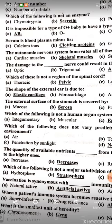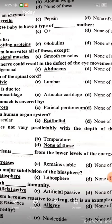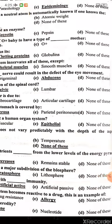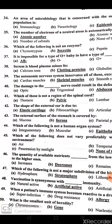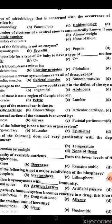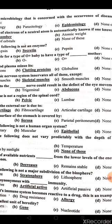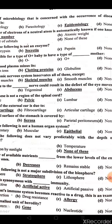The quantity of available nutrients decreases from the lower level of the energy pyramid to the higher ones. Which of the following is not a major subdivision of the biosphere? Stratosphere is the answer.